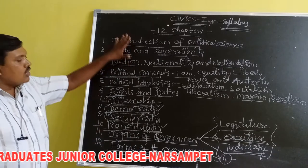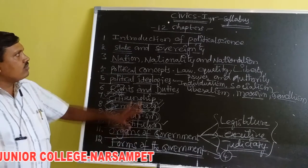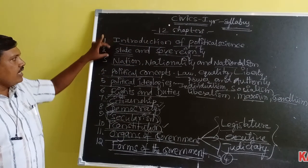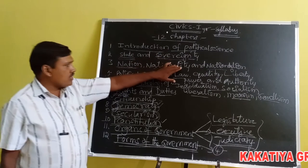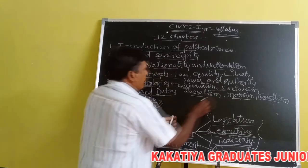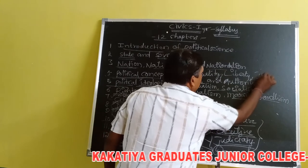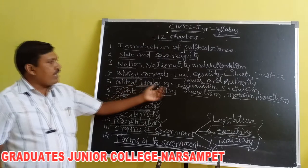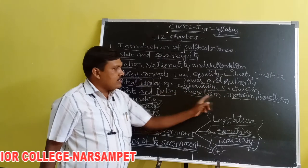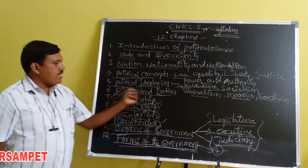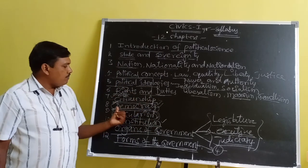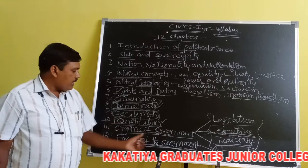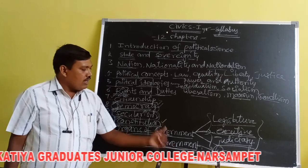So these are the 12 chapters in first year civics: Introduction to Political Science, State and Sovereignty, Nationality and Nationalism, Political Concepts covering law, equality, liberty, justice, power and authority, Political Ideologies covering individualism, socialism, liberalism, Marxism and Gandhism, Rights and Duties, Citizenship, Democracy, Secularism, Constitution, Organs of Government, and Forms of Government.